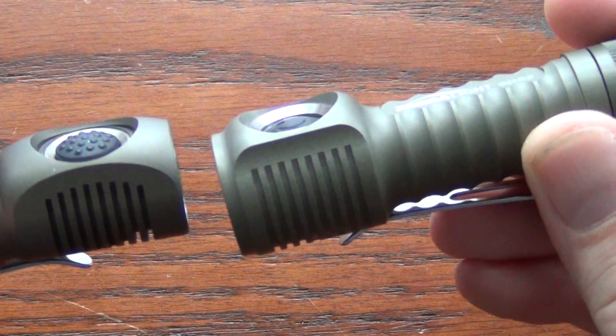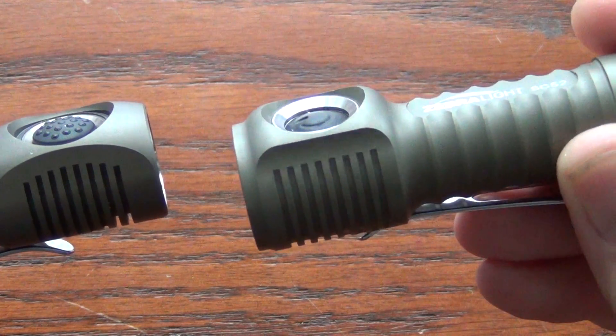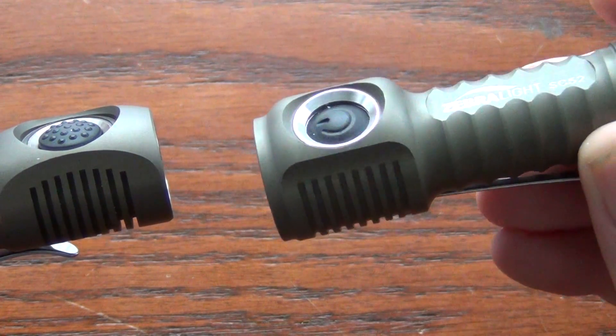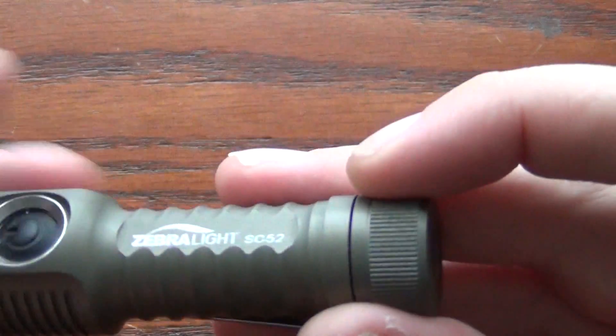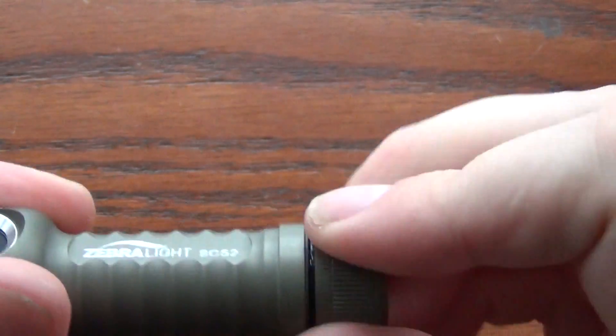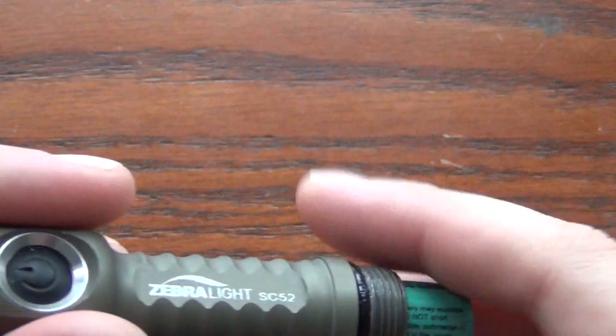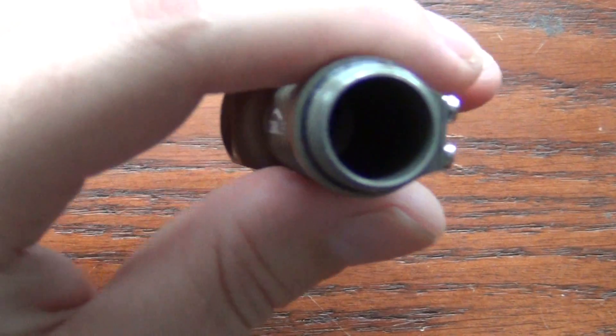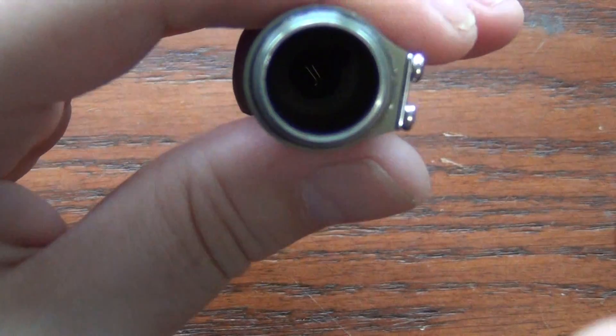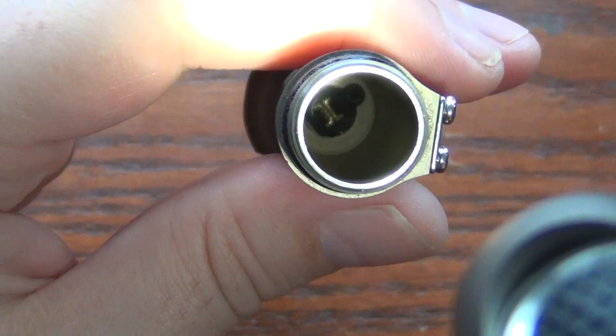You can see now that the switch in the SC52 is much more recessed, so that you're not going to get accidental activation with this like you did with this. So no reason to lock out the tail cap by turning it. One last thing I'll show you before I end this is hopefully you can see in here. They've really sealed the tube, you see that. Very clean.